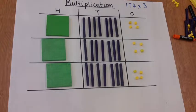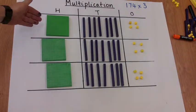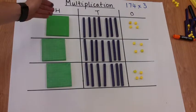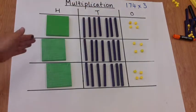Okay, so here we have the concrete method for multiplication. We've got 174 times 3. So we've got 174 laid out in the hundreds, tens and ones three times.